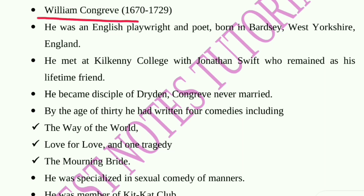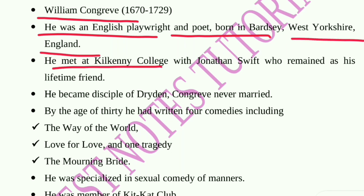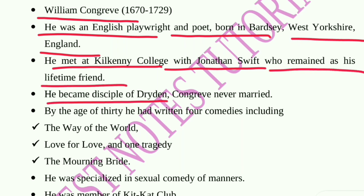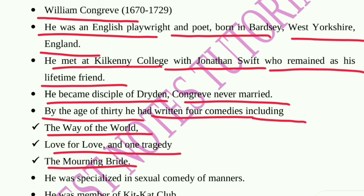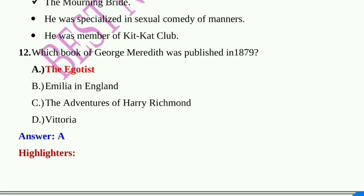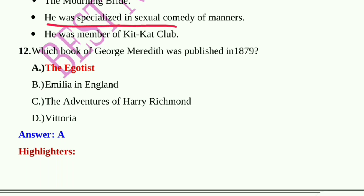William Congreve (1670–1729) was an English playwright and poet born in Bardsey, West Yorkshire. He met Jonathan Swift at Kilkenny College, who remained his lifetime friend. He became a disciple of Dryden. Congreve never married; by age 30 he had written four comedies including The Way of the World and Love for Love, and one tragedy, The Mourning Bride. He was specialized in sexual comedy of manners and was a member of the Kit-Cat Club.